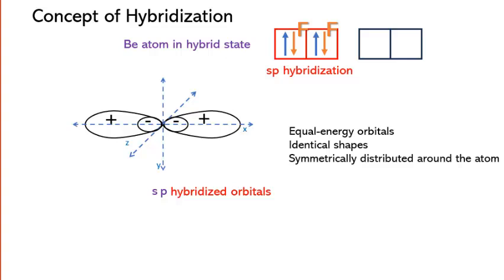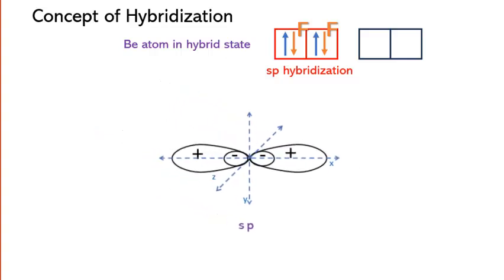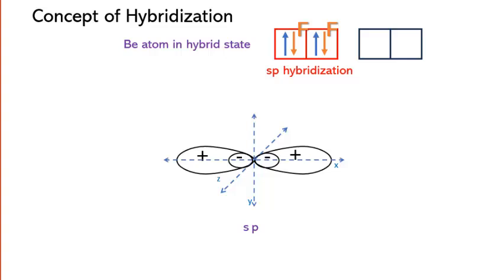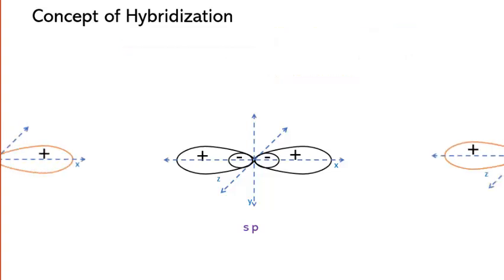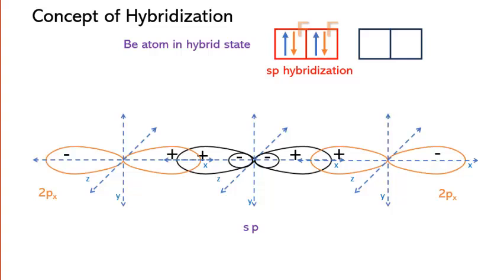With the sp hybridized orbitals in place, beryllium can now form two equivalent bonds with the 2px orbitals of fluorine atoms. Each sp hybrid orbital overlaps with a 2px orbital of a fluorine atom. This makes sp hybridized orbitals ideal for forming bonds with fluorine atoms. So we can understand that the hybridization process ensures that the bonds formed are of equal length and energy, resulting in a more stable molecule.